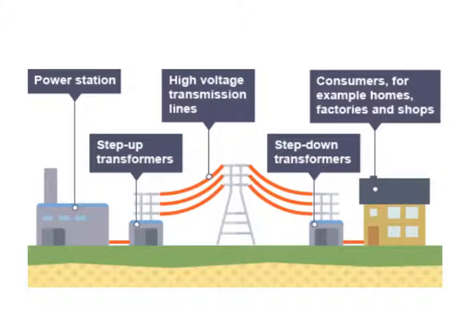To reduce energy losses and increase the efficiency of the transfer of electricity from the power station to the home, we have a step-up transformer, which creates a much higher voltage. One of the things you will have to find out is how this high voltage reduces energy losses as the electrical energy is transported to the home.